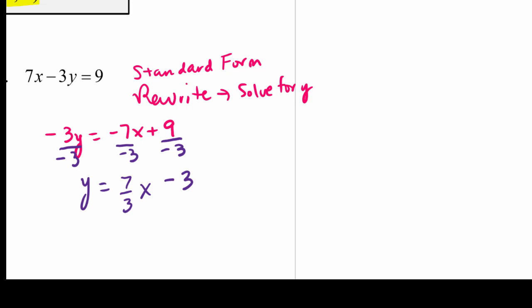So our slope will be the fraction, so slope is 7 thirds, and then we have here our b, that gives us the y-intercept of 0, negative 3.